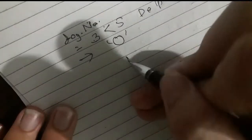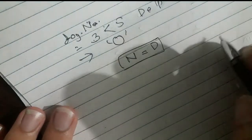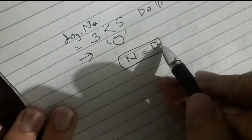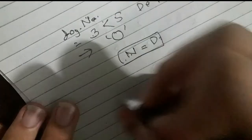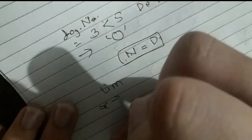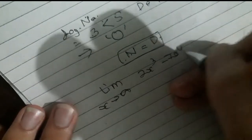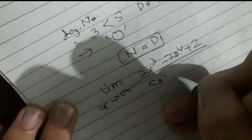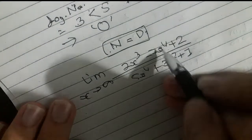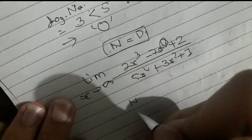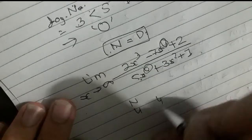When the degree of numerator and degree of denominator are equal: limit x tends to infinity, (2x³ minus 7x⁴ plus 2) over (5x⁴ plus 3x² plus 1). The highest power in the numerator is 4, and the highest power in the denominator is also 4, so they are equal.